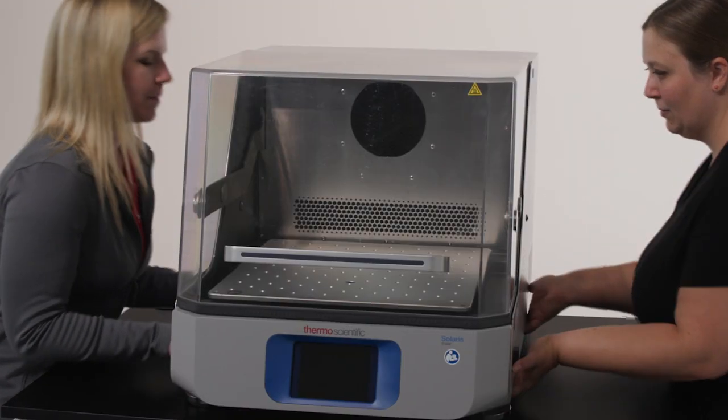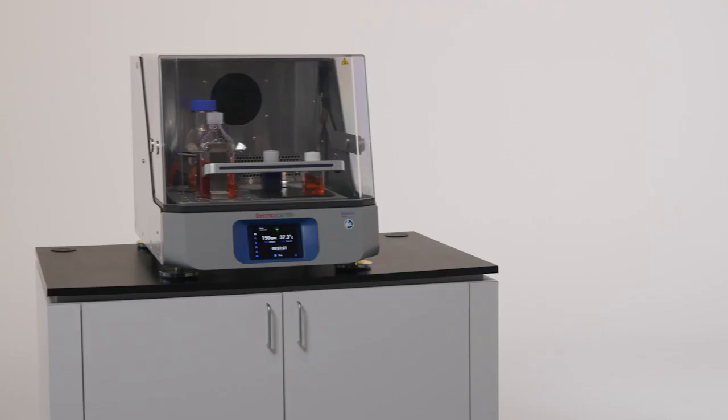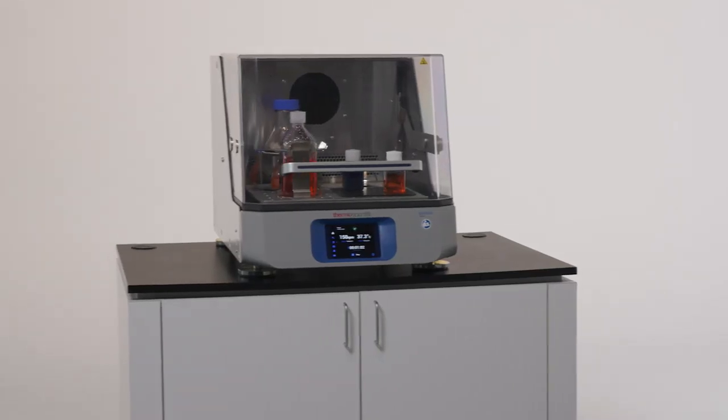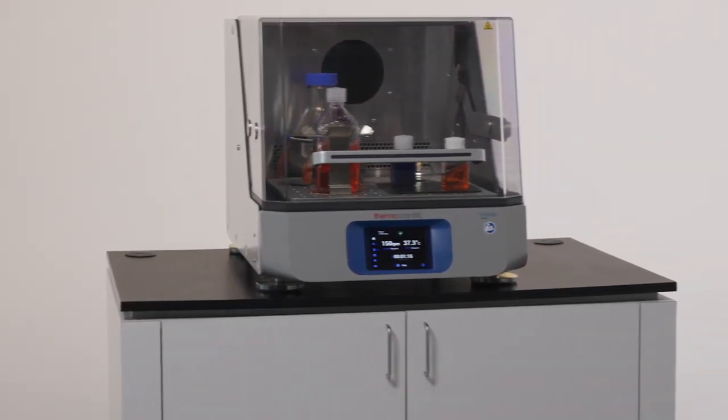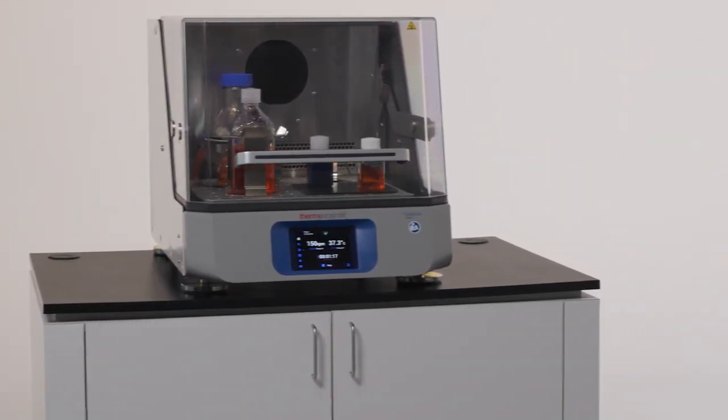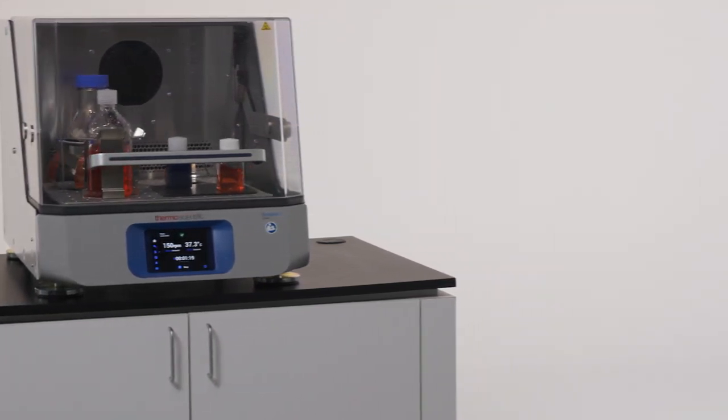It will take at least two people to transport the shaker. Be sure to lift it from the sides and place it on a clean, stable, and level table or bench near an electrical outlet. Allow three inches or eight centimeters of free space on all four sides of the shaker for proper ventilation and optimum performance.